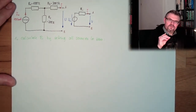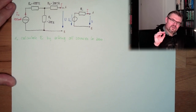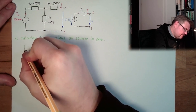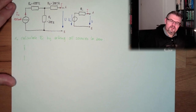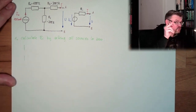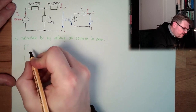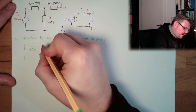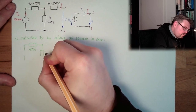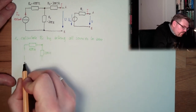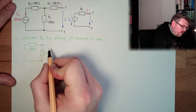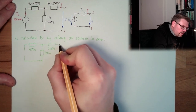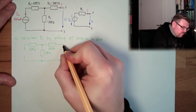A current source with a source current of 0 A is simply open — there's a hole in that branch, so for sure 0 A flows there. Then we have R1 = 100 ohms, R2 = 200 ohms, R3 = 300 ohms, and the two connectors A and B.